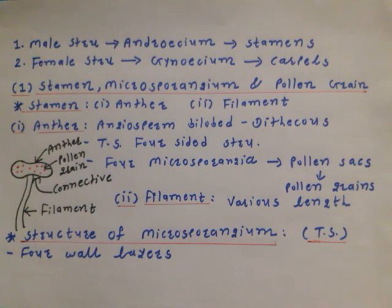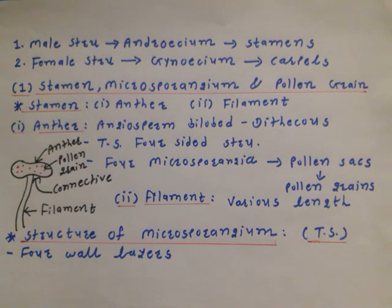Now we are going to study the structures in detail — stamen, microsporangium and pollen grain. Stamen possesses two parts: anther and filament.